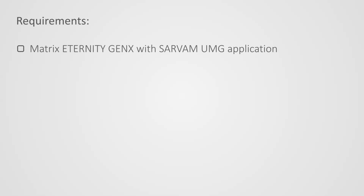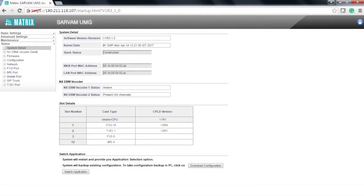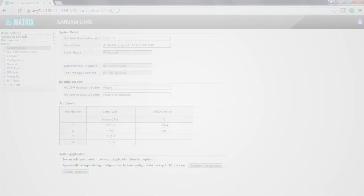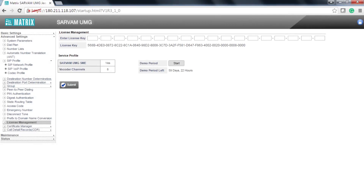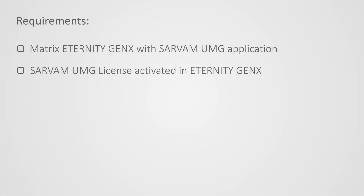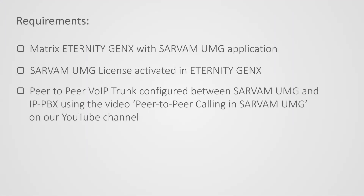Requirements: Matrix Eternity GENX with Servum UMG application. Servum UMG license activated in Eternity GENX. Peer-to-peer VoIP trunk configured between Servum UMG and IP PBX — refer to the Peer-to-peer Calling in Servum UMG video on our YouTube channel.